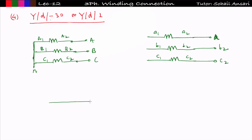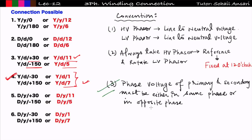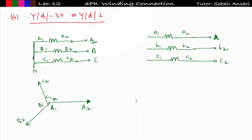First I will draw the phasor diagram of the star connection. A2 is connected with supply, meaning it is at high potential, so this is A2 and A1. Similarly B2, B1 will lag by 120 degrees, and then C2, C1. Now, while drawing the phasor diagram, keep in mind Rule #3: the phase voltage of primary and secondary must be either in the same phase or in opposite phase. Let us first take the same phase case to make YD1 — the line-to-neutral voltage of the LV side must lag the HV side.